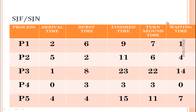Waiting time equals turnaround time minus burst time. So: P1 = 7−6 = 1, P2 = 6−2 = 4, P3 = 22−8 = 14, P4 = 3−3 = 0, P5 = 11−4 = 7.